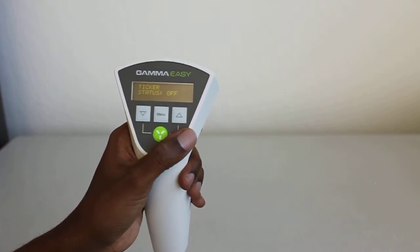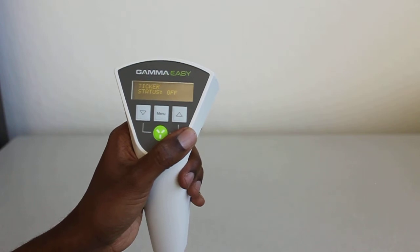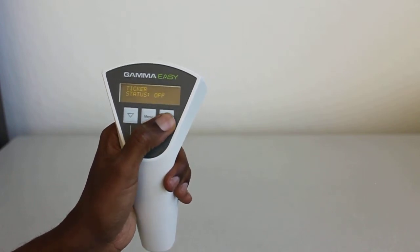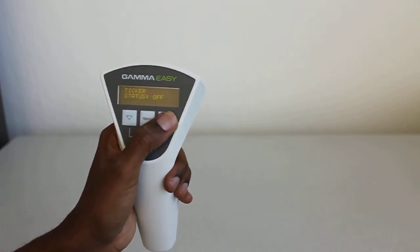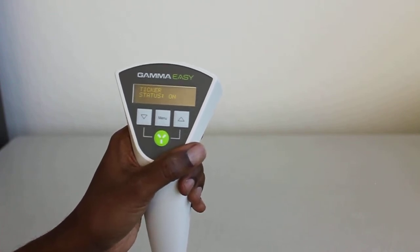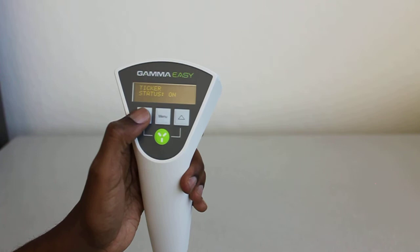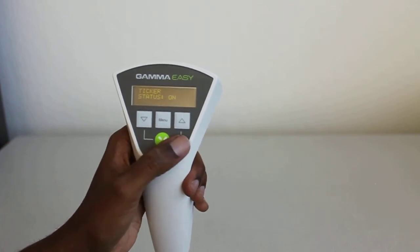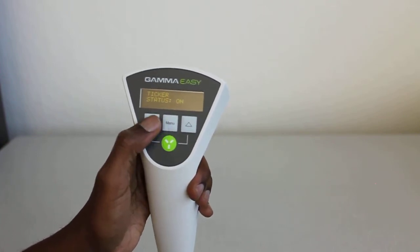Let's just go back to let's say 60, and then hit the menu button again. Ticker status is off. If you want to hear the alert ticker, you can turn that on just by hitting the up arrow over here. Ticker status now is on, and you can turn that off just by hitting this left-hand side here.